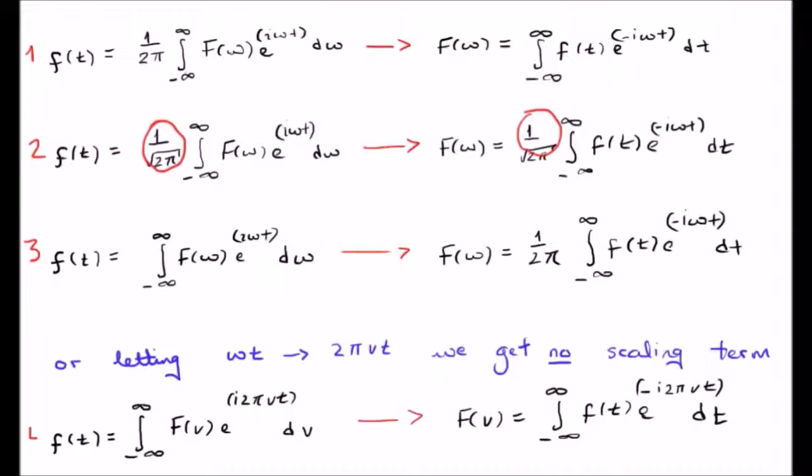We can also write this using the linear frequency rather than the angular frequency, and I've discussed how we can go between angular and linear frequencies in video number two. If we make our definition using cosine of two pi nu t instead of omega t, we get the equations written as number four. You might say there is no scaling term. Well, the scaling term is there because the two pi has gone into the argument of the exponential function.